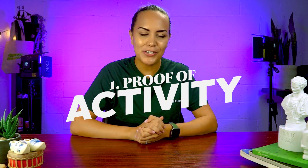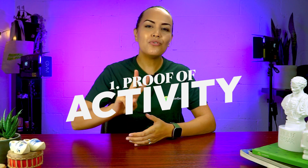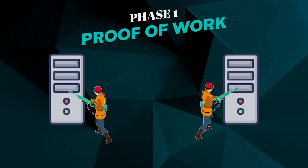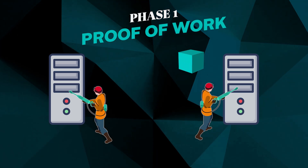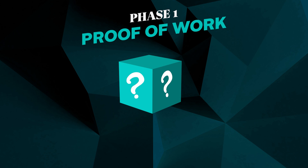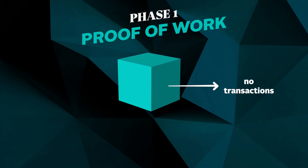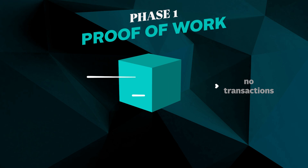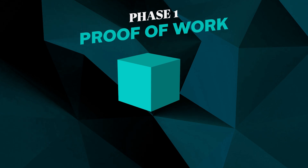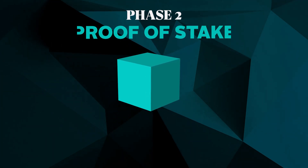Proof-of-activity goes through two phases before a completely new block is ready for the blockchain. Phase one is known as the proof-of-work phase, where miners compete against each other with their computing power to generate or mine a new block for the blockchain. The generated block, however, is incomplete — they do not include transactions. Instead, they are embedded with the block reward address and the transaction title. At this point, the system switches to proof-of-stake.